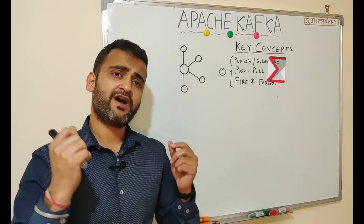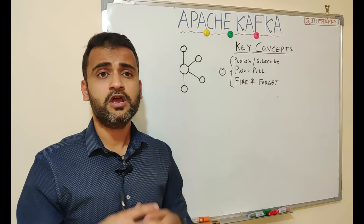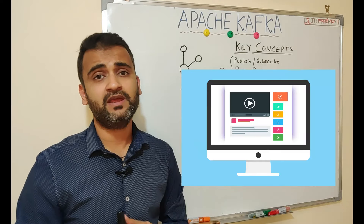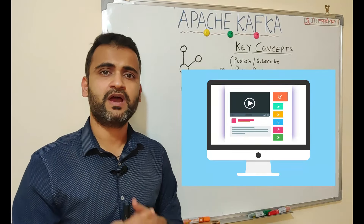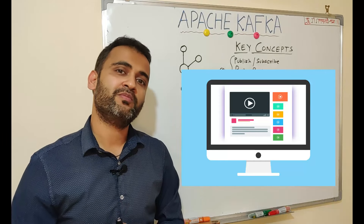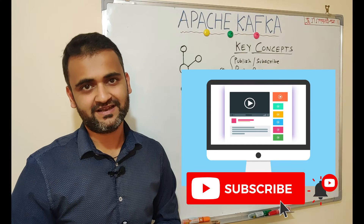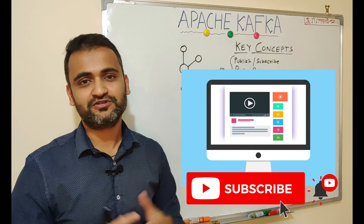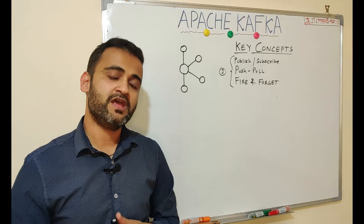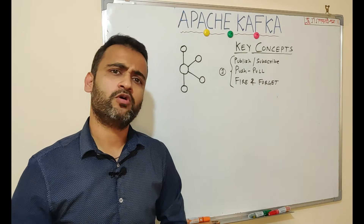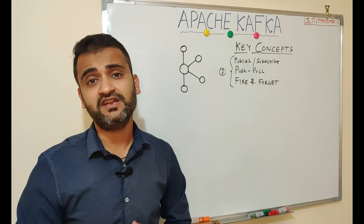Let's understand the first key concept in Kafka: the publish-subscribe method, also known as push-pull or fire-and-forget. Suppose I am recording this video — in older times, I would have mailed it to you as an attachment or sent a DVD to your home address, requiring me to know your exact name and location. But with YouTube, as a content producer I simply publish content on a platform, and whoever wants to learn can subscribe to my channel and utilize my videos.